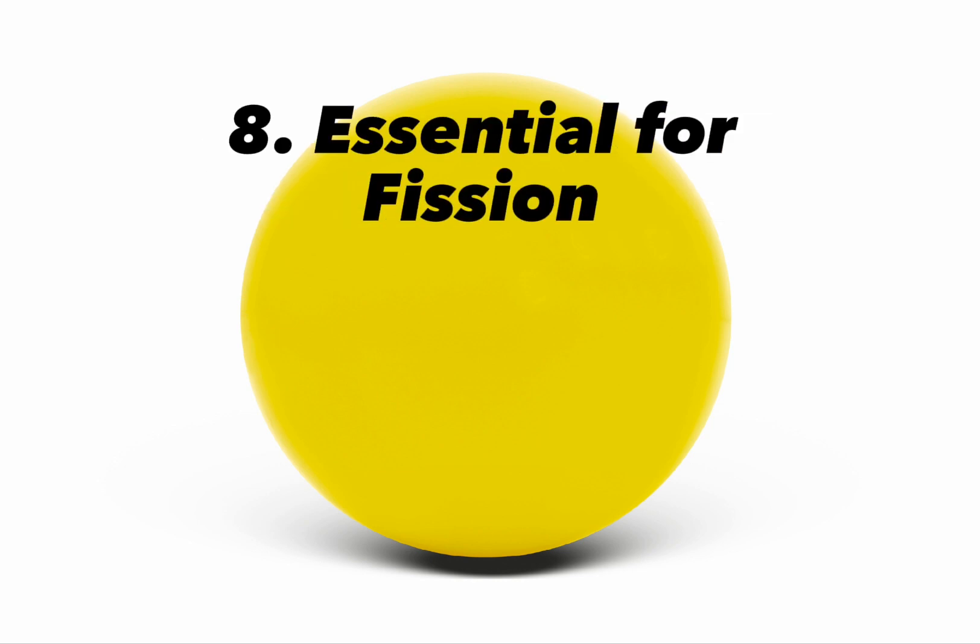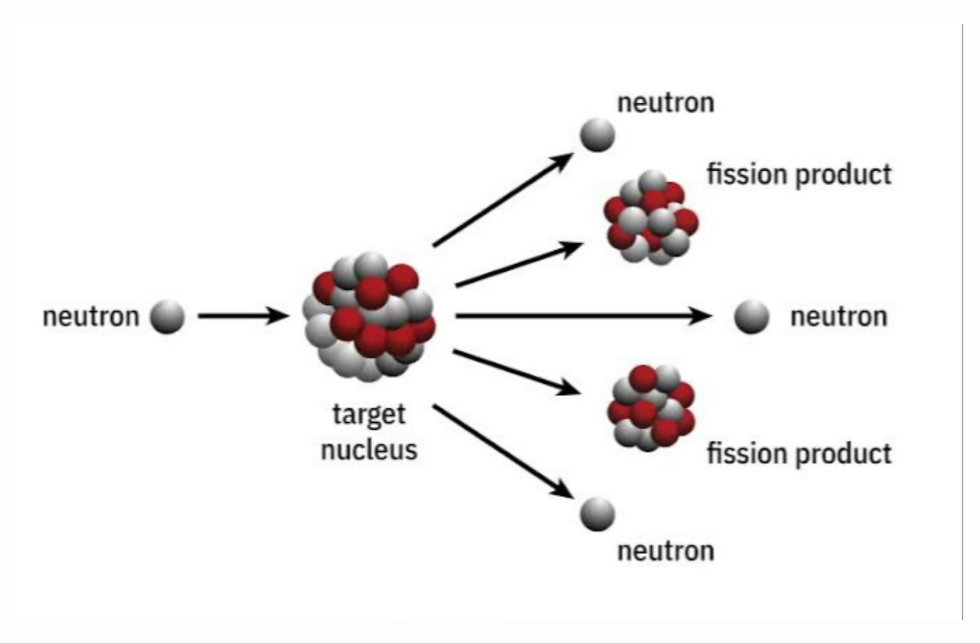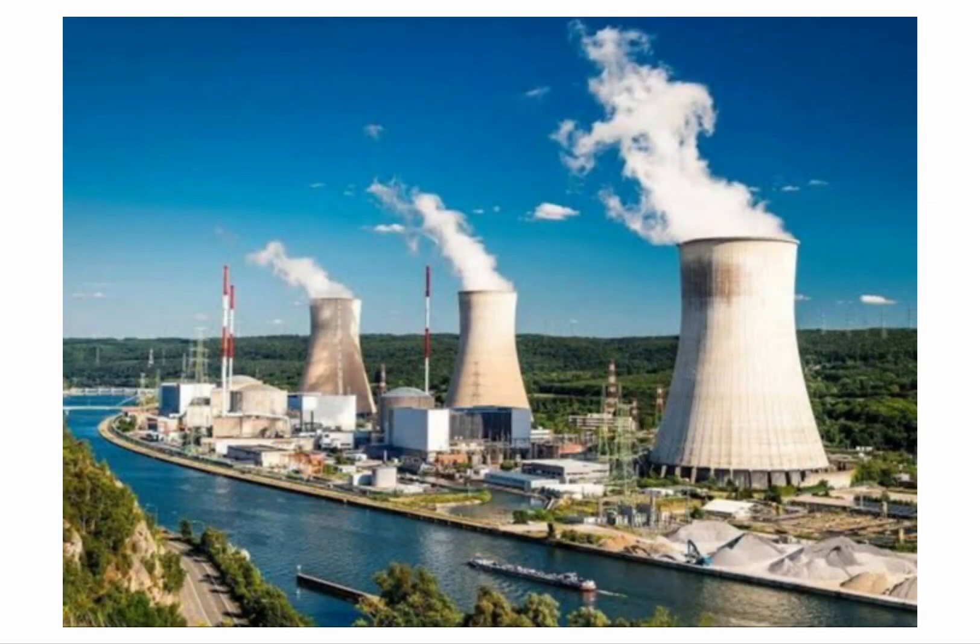8. Essential for fission. Neutrons are essential for nuclear fission, a process in which the nucleus of an atom splits into smaller parts, releasing a tremendous amount of energy. In nuclear reactors, neutrons initiate and sustain the chain reactions that provide the energy used for various applications, including electricity generation.